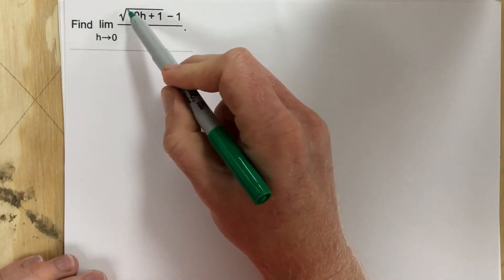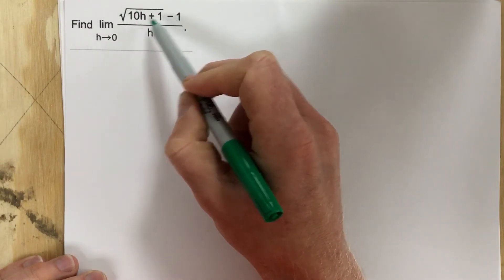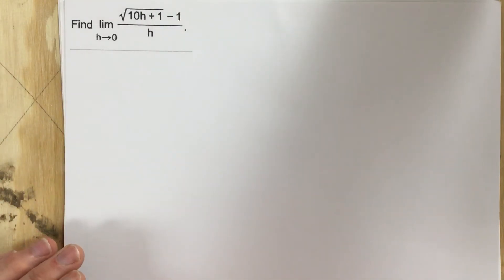Whenever I see a root on top, and I also see that it's two terms, so it's root of this minus 1, the first thing I think is multiply by the conjugate. That doesn't always work, but I really like to try to do that because it works quite often.